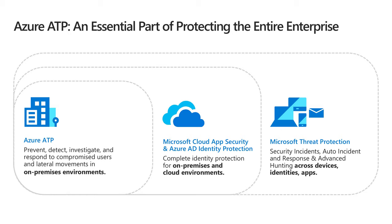Azure Active Directory Identity Protection and Microsoft Cloud App Security, together with Azure ATP, help to protect identities both on-premises and in the cloud. Identity Protection detects risky sign-in events from Azure AD, while Cloud App Security looks for anomalies across a user's session — looking at not just Microsoft products but also third-party cloud apps like Salesforce, Box, G Suite, and even AWS. Microsoft is bringing together these sources of identity data to provide a complete unified picture across on-premises and cloud, which helps to simplify security, reduce costs, and raise your security posture while lowering risk.